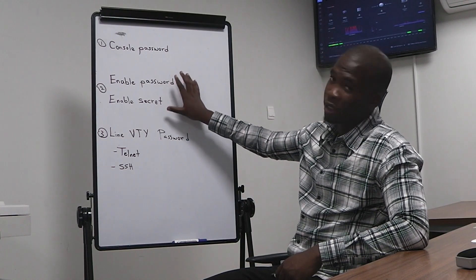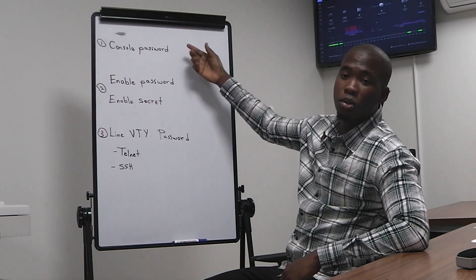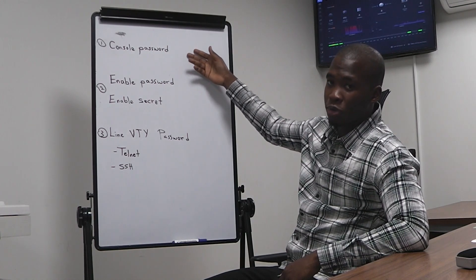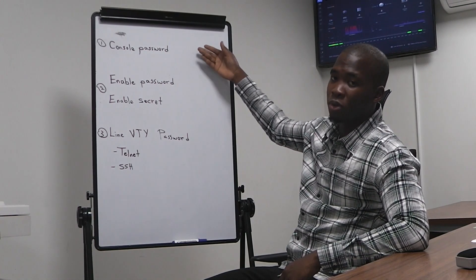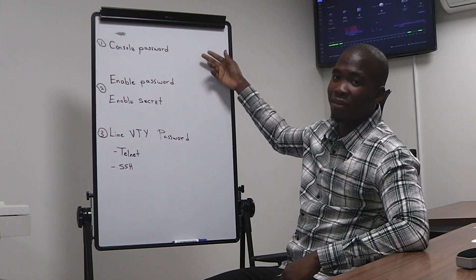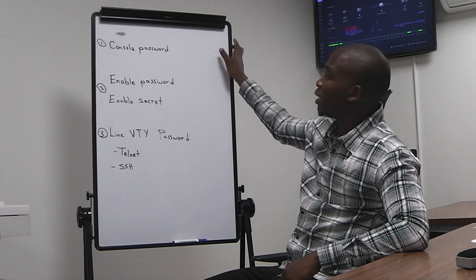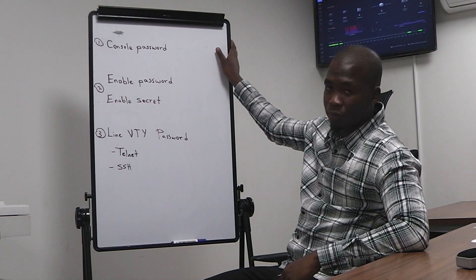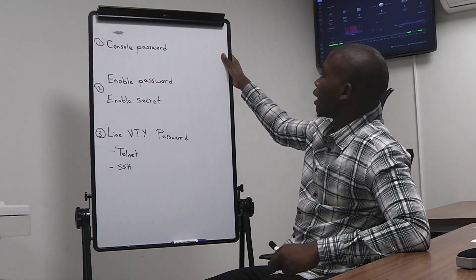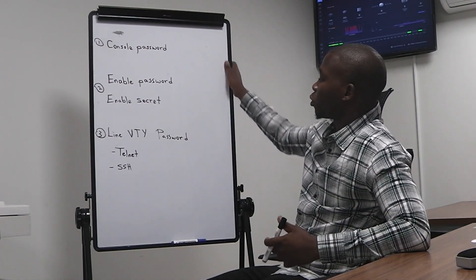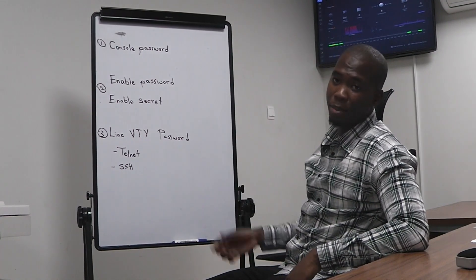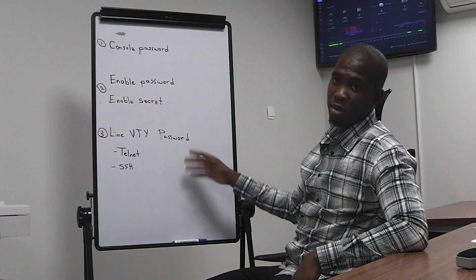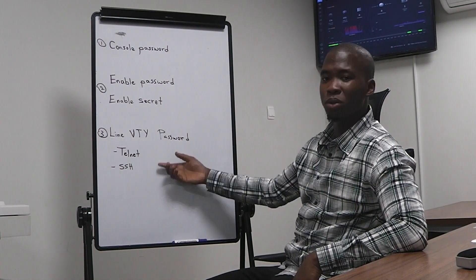The console password is assigned to the console port so that if anyone is using the console port to access the command line interface of the device, it will ask for whatever password has been configured. We also have the line VTY password, and under line VTY we have Telnet and SSH.